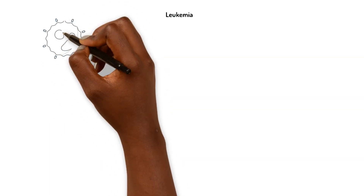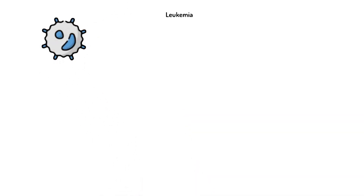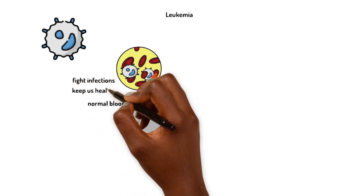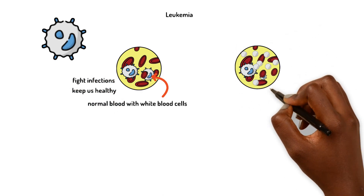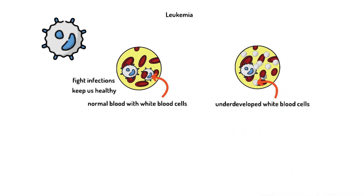Finally, let's look at leukemia. Leukemia is a type of cancer that affects white blood cells. These are important for fighting infections and keeping us healthy. But in leukemia, the body produces too many underdeveloped white blood cells that cannot do their job properly. In other words, they don't know how to protect the body from infections.